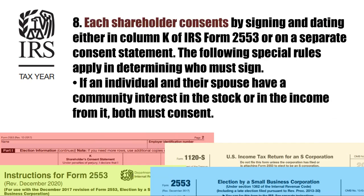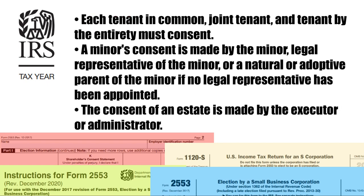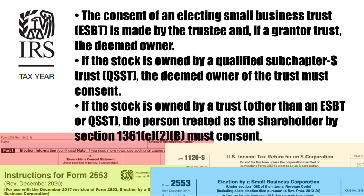Number 8. Each shareholder consents by signing and dating either in column K of IRS Form 2553 or in a separate consent statement. The following special rules apply in determining who must sign: If an individual and their spouse have a community interest in the stock or in the income from it, both must consent. Each tenant in common, joint tenant, and tenant by the entirety must consent. A minor's consent is made by the minor, legal representative of the minor, or a natural or adoptive parent of the minor if no legal representative has been appointed. The consent of an estate is made by the executor or administrator. The consent of an electing small business trust (ESBT) is made by the trustee, and if a grantor trust, the deemed owner. If the stock is owned by a qualified Subchapter S trust (QSST), the deemed owner of the trust must consent.